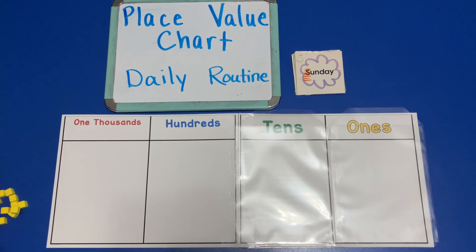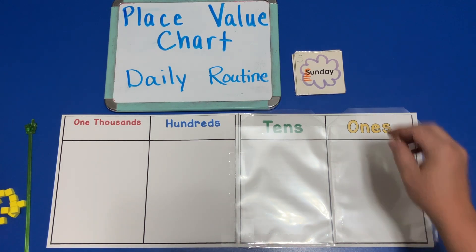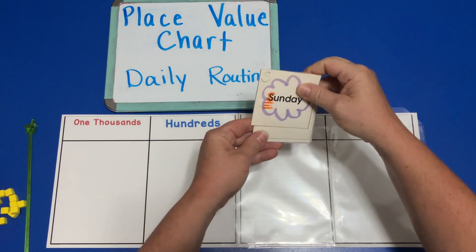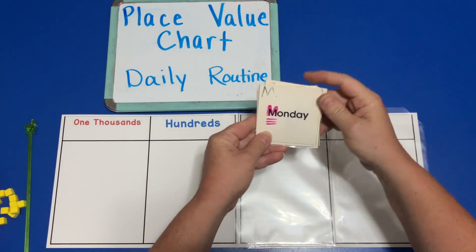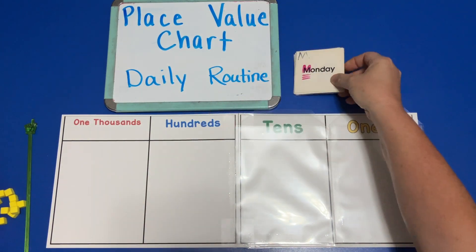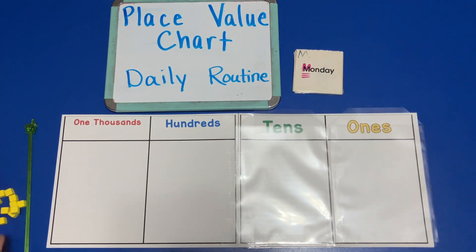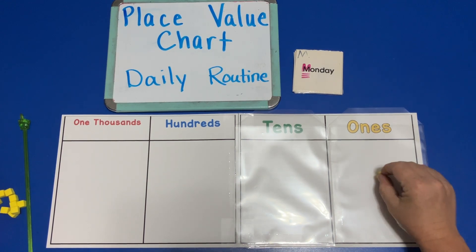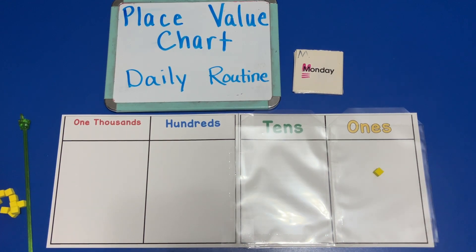We don't usually do school on Sunday, so we're going to move it to Monday. On the first Monday that we do in our daily routine with the place value chart, we would put a one in the ones place.